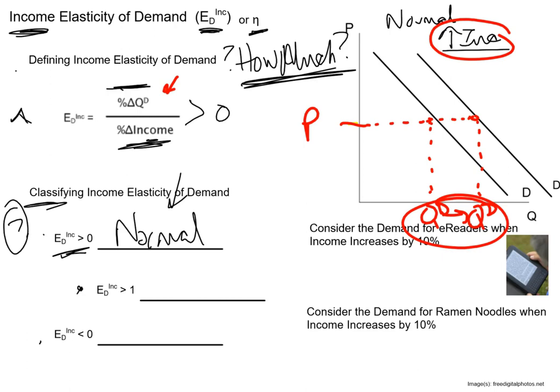We're going to introduce a bit of extra terminology here. If the income elasticity of demand is greater than one, we have a special name for those goods — we call them luxury goods. We've used the term loosely before, but now we formally define luxury goods as goods with an income elasticity of demand greater than one, meaning when income goes up, there is a greater percentage change in quantity demanded.